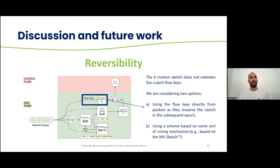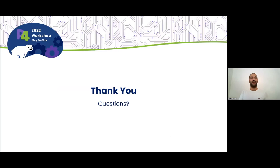Chameleon also does not maintain the culprit flows of the attacks or the changes, so it cannot, on its own, detect the changes. We need a reversibility mechanism, and we are considering two options for this. The first one is to use the flow keys directly from the packets as they traverse the switch in the subsequent epoch. So this would have us understand that the packets that come in the first epoch would have the same flow keys as the second epoch, and this might not be true all the time. The second approach would be by using a scheme based on some sort of voting mechanism, for example, the one used on the MV sketch, which uses a voting mechanism to choose the heaviest keys in the network. But this, again, would not make Chameleon a generic approach, because it would only be based on the keys that have used, and not all of them. Thank you, and if you have any questions, I'd be glad to answer them.